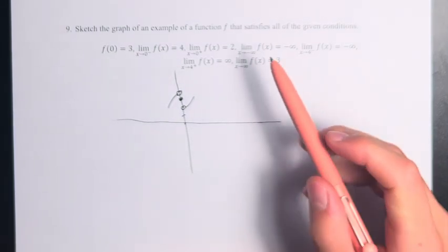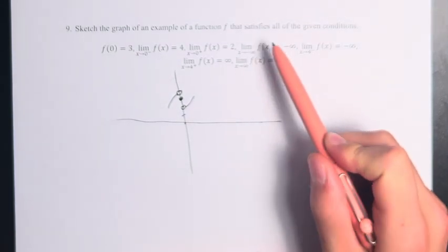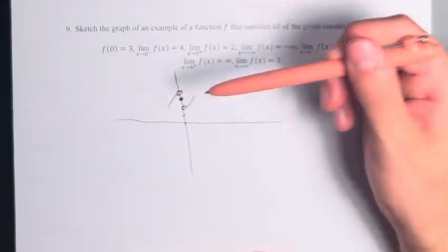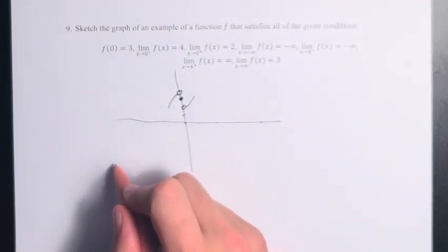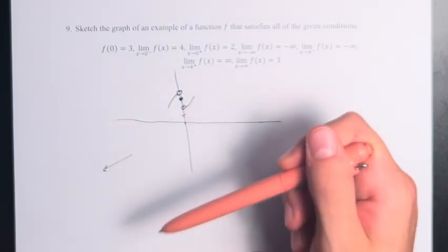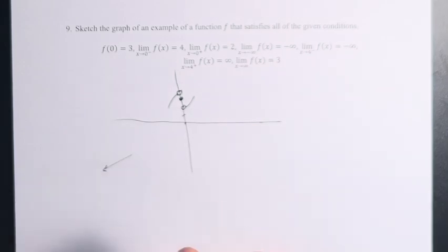We're also told that as x approaches negative infinity, the value of the function also is approaching negative infinity. That doesn't mean something as precise as what we have here. That just means as x gets lower, the value of the function gets lower, and it goes generally in that direction.